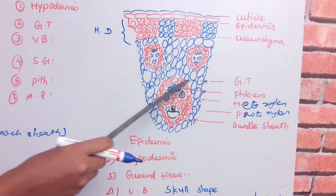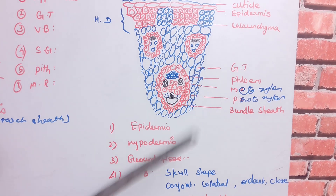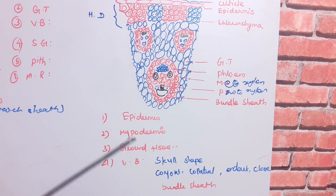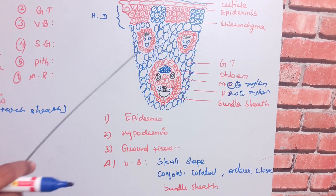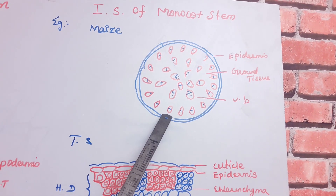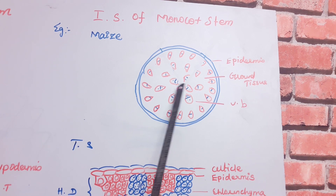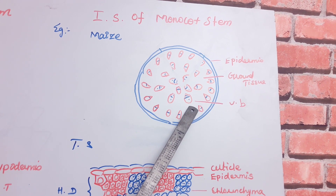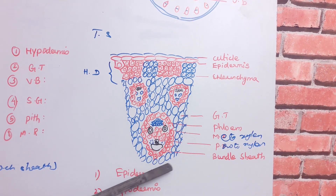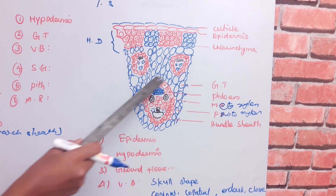Inside the hypodermis is the ground tissue, which contains the scattered vascular bundles. In the monocot stem, the vascular bundles are scattered throughout the ground tissue. If you look at the diagram, the vascular bundles in the periphery are of smaller size, while toward the center they are of bigger size.